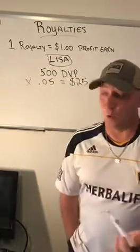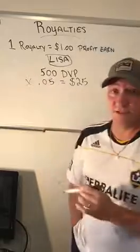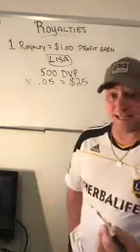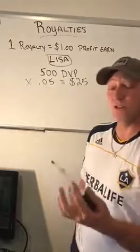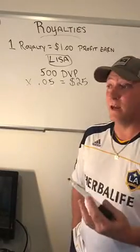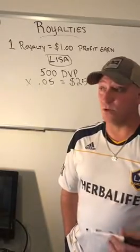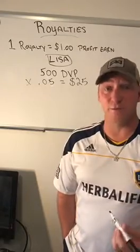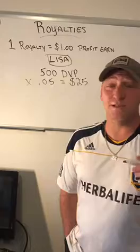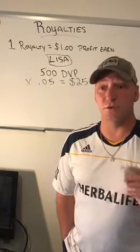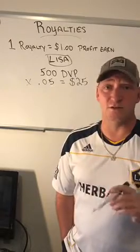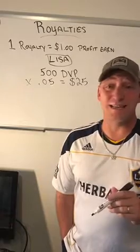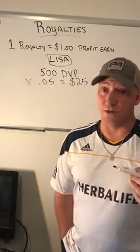As we go further along, Lisa ends up getting more volume or creates more supervisors on her team, which would be Tina's second line — so Tina gets paid off of those as well. All along Tina's working, getting more distributors, and helping them get up the marketing plan. Your main focus with your distributors is to help them get to supervisor as quickly as you can, because as soon as they get there, you start collecting that royalty.